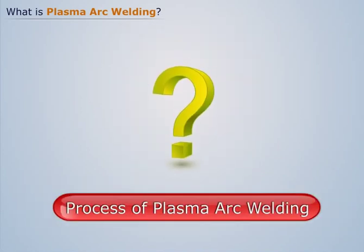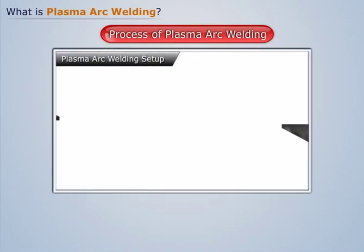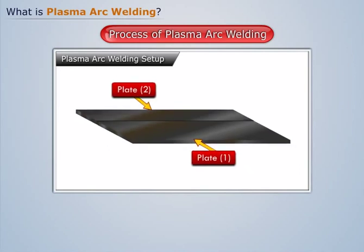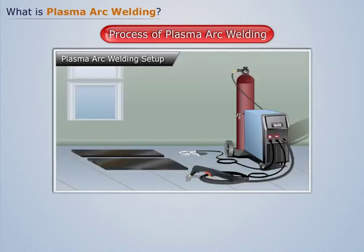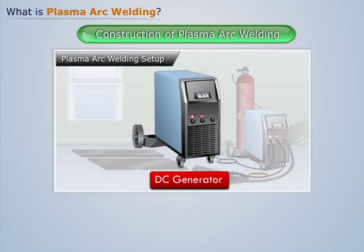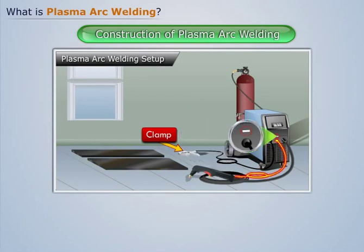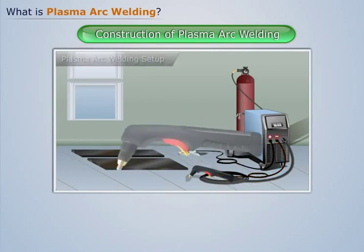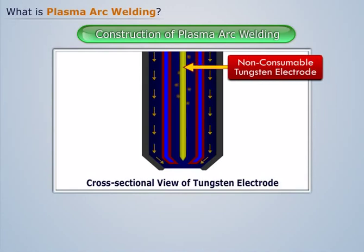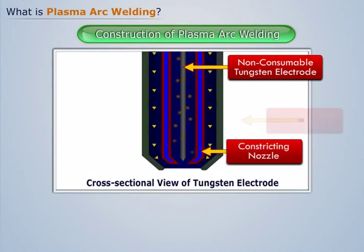To understand how plasma arc welding is carried out, let's join these two metal plates using the process. First, let's understand the construction of plasma arc welding. The welding setup consists of a DC generator whose positive terminal is connected to the clamp and the negative terminal is connected to the welding torch. The welding torch basically consists of a non-consumable tungsten electrode surrounded by a constricting nozzle, which is further surrounded by a shielding gas nozzle.